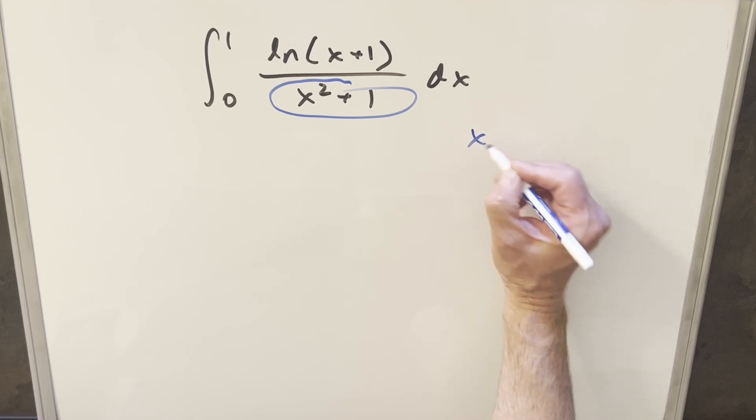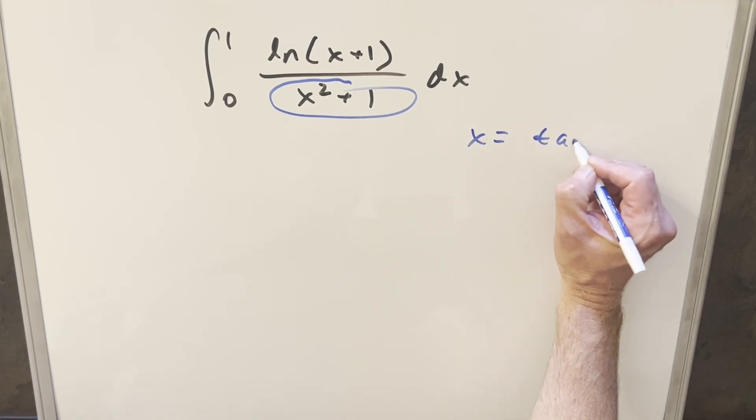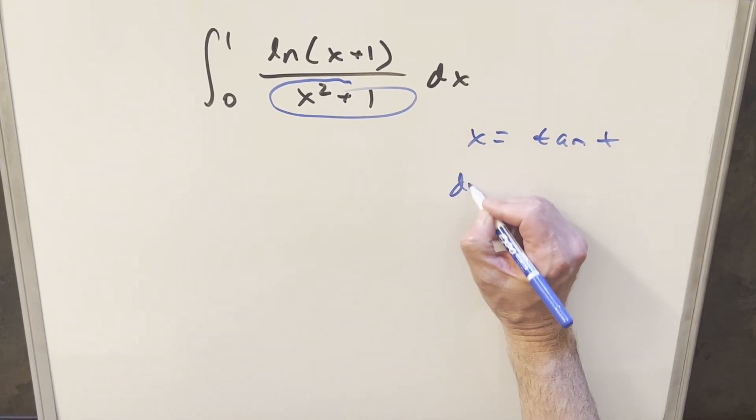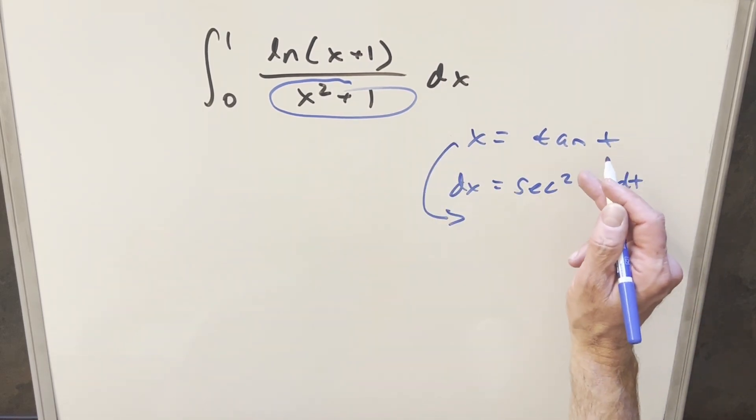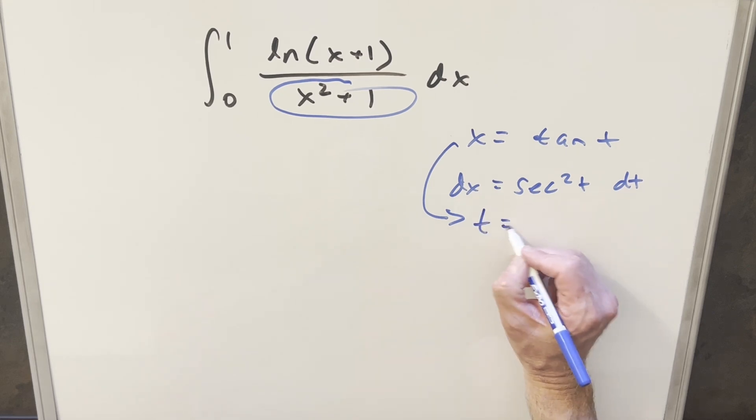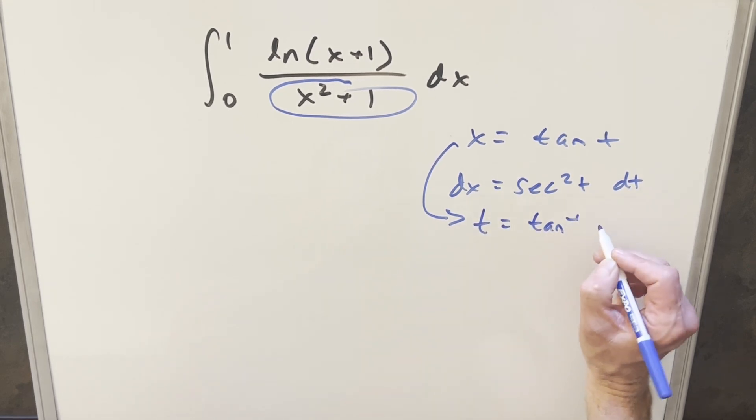So I'm going to set x equal to tan of t, then for dx we're going to have secant squared t dt, and let's isolate t by taking arc tan on both sides. So we end up with t equals arc tan of x.